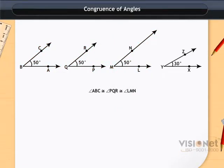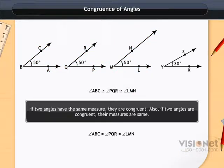Hence we say that if two angles have the same measure they are congruent. Also if two angles are congruent their measures are same. As the congruence of angles depend on the measure of angles, we say that two angles are congruent if they are equal.